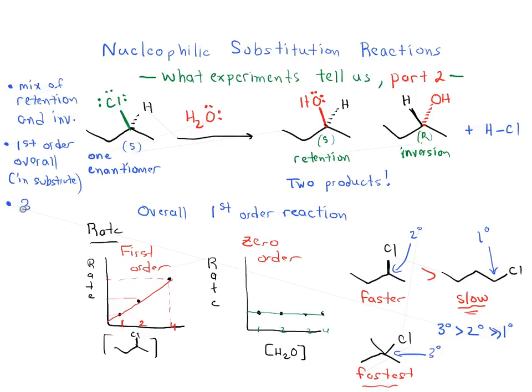This is in stark contrast to the previous type of substitution reaction, where the primary substrate was much faster than secondary, which was much, much faster than tertiary. So the question we have to answer is: how do we explain that under these conditions we have a mixture of retention and inversion, the reaction is first order overall, and tertiary is faster than secondary, which is much faster than primary? What mechanism can we come up with that will explain these results and help us understand how this type of substitution reaction is occurring? That will be discussed in the next series of videos.